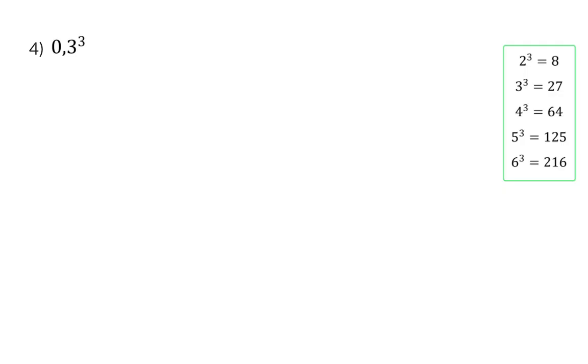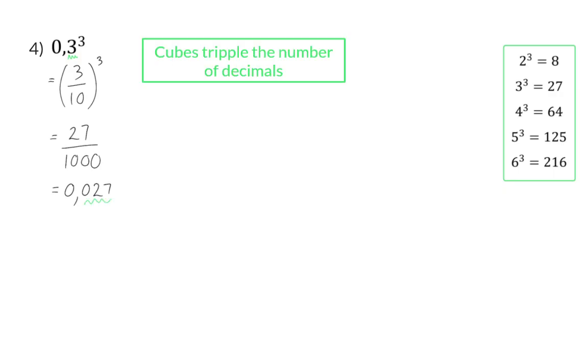When it comes to cubes, you can once again choose to first rewrite as a common fraction and then calculate the cube of that fraction. 3 cubed is 27 and 10 cubed is 1000, which means as a decimal, we have 0.027. But once again, you can choose to use the shortcut and see that our one decimal place that we started with has tripled to three decimal places.